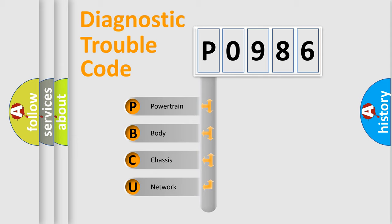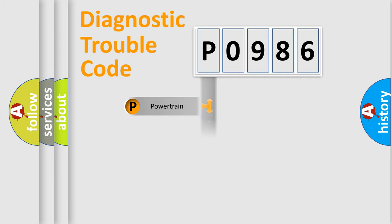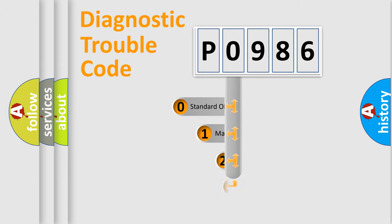We divide the electric system of an automobile into four basic units: Powertrain, Body, Chassis, and Network. This distribution is defined in the first character of the code.